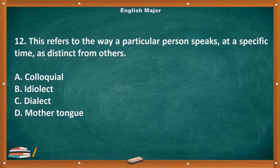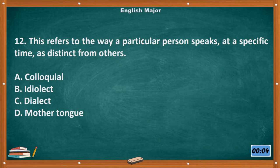Question number 12. This refers to the way a particular person speaks at a specific time, as distinct from others. A. Colloquial. B. Idiolect. C. Dialect. The correct answer is letter B, Idiolect.